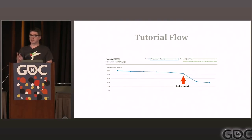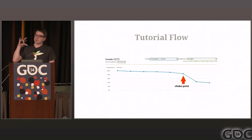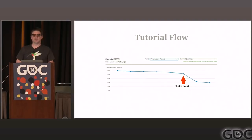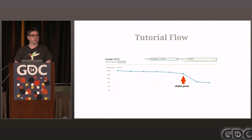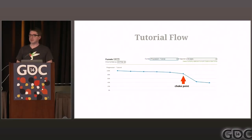Tutorial flow is another classic one. Building a data-driven view of the tutorial, being able to dynamically reconfigure it on the fly, and thinking of the tutorial like a state machine you can play with as users interact with it. If there's a choke point where users are falling off at, say, the seventh or eighth stage, that's a good motivator to go in and A/B test different versions of what you're presenting to the user there.